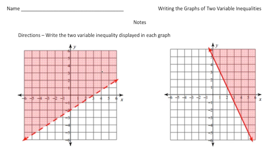Take a look at this first graph here. We need to come up with the actual two-variable inequality that describes this graph. Let's first look for the y-intercept. The y-intercept is going to be at negative two. Now the slope — we know it's going to be a positive slope because it's going upward. Let's find two points: the x-intercept and the y-intercept, so the slope is going to be up two over three. So it's going to be two-thirds x minus two.